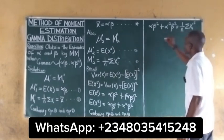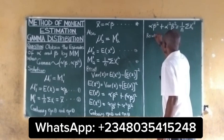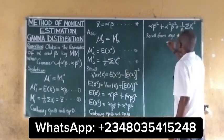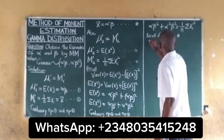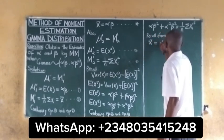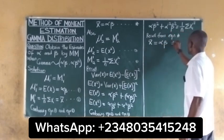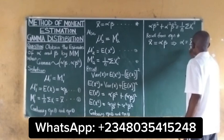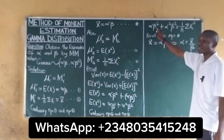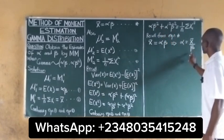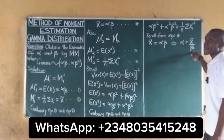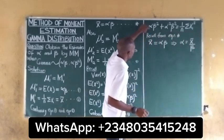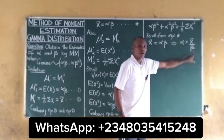We now recall from equation star that x-bar equals alpha·beta, which implies alpha equals x-bar divided by beta. Wherever we see alpha in the equation, we substitute x-bar over beta.